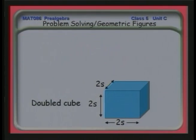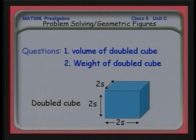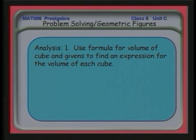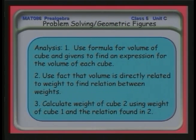Let's continue our analysis. We're asked: what is the volume of the doubled cube compared to the volume of the first cube? And what's the weight of the doubled cube if the weight of the first cube is 100 pounds? First, we'll use the formula for the volume of the cube to find an expression for the volume of each cube. Next, we'll use the fact that volume is directly related to weight to find a relationship between the weights. Finally, we'll calculate the weight of the second cube, knowing the weight of the first.